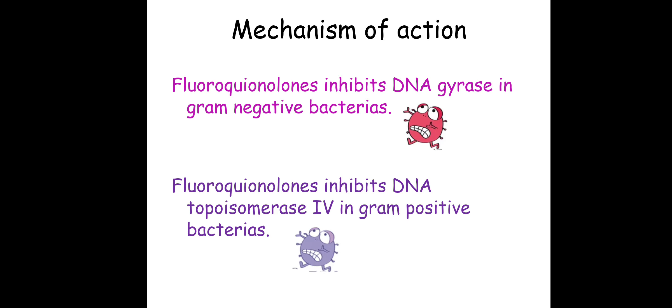We shall check out what normally happens in a bacterium — what normally is the action of gyrase and topoisomerase 4 — and then we will see how our drug will inhibit these two enzymes and what will happen when these two enzymes are inhibited.